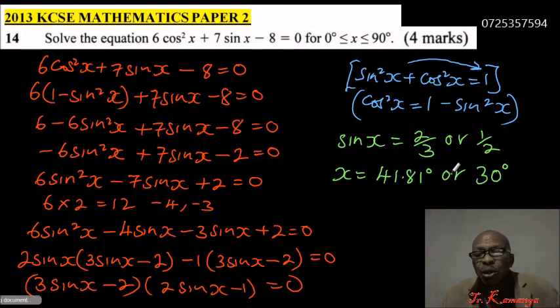So that is how you get the angle. Because we have been restricted to work with 0 to 90, these are the two angles that satisfy the value of x which will be able to solve the equation that we have.